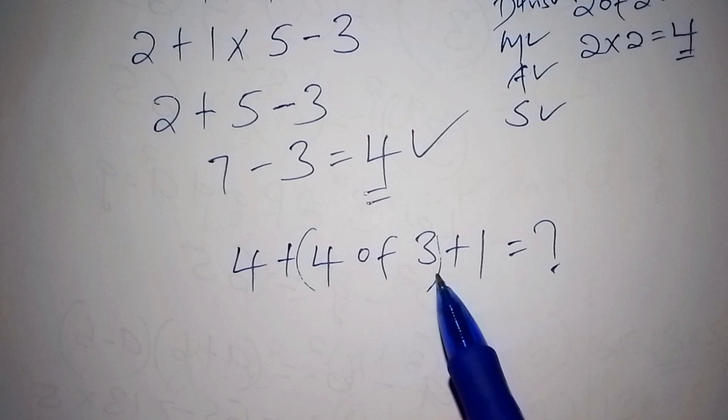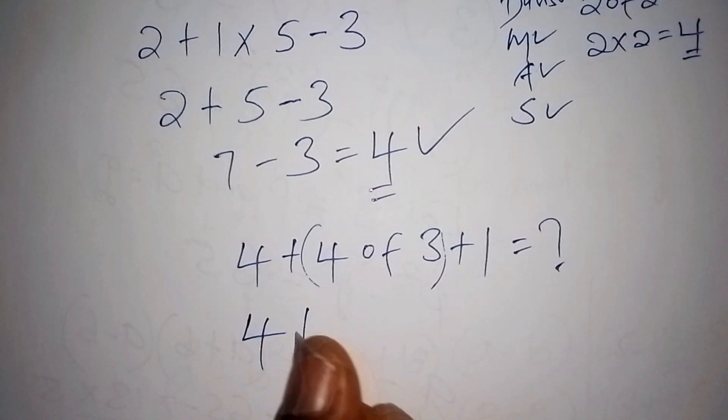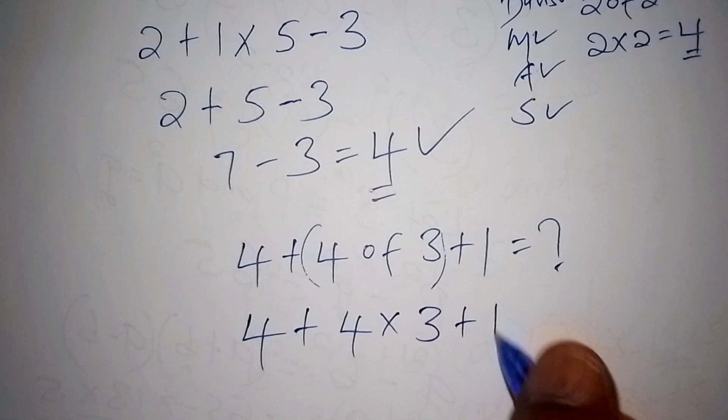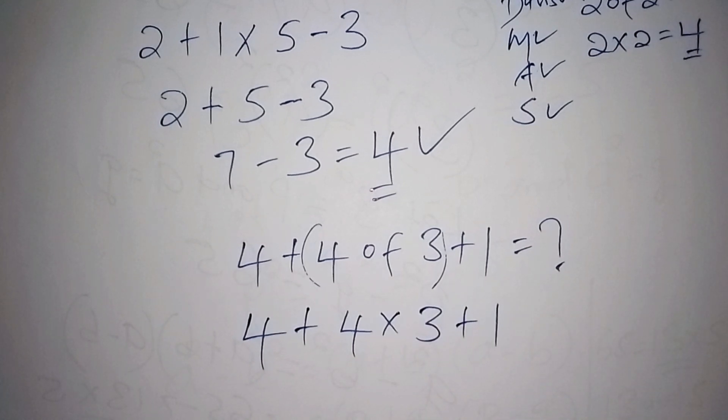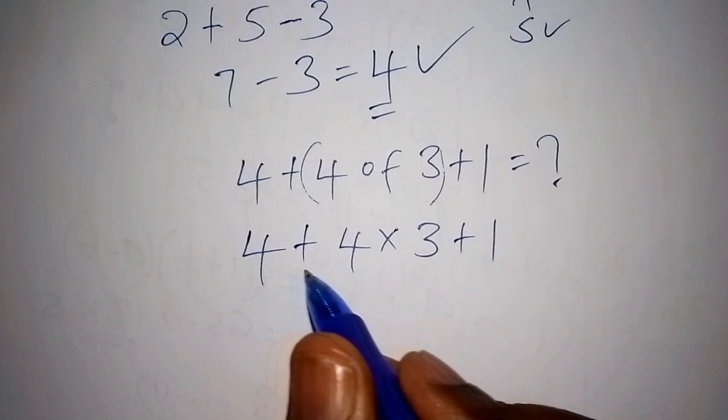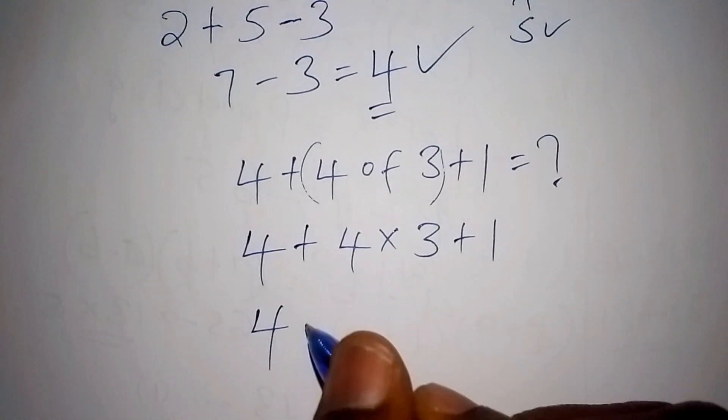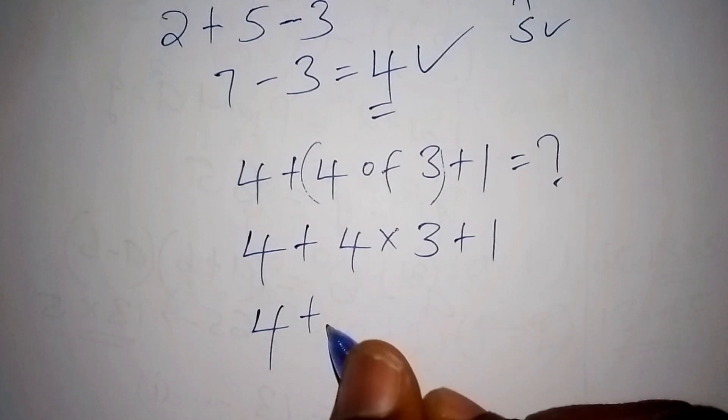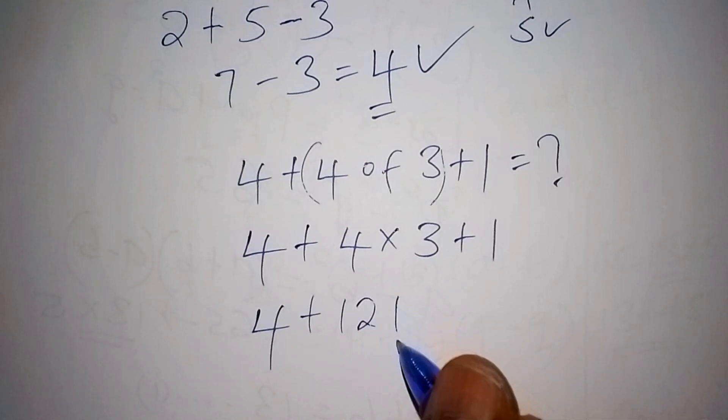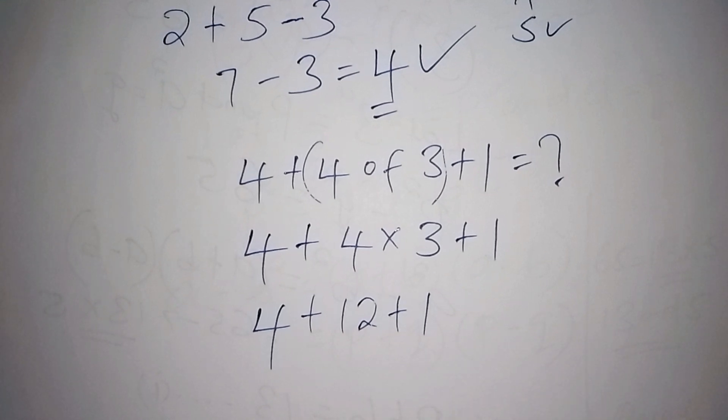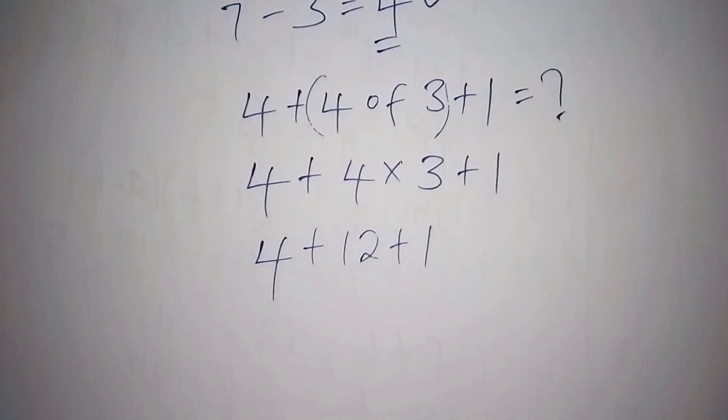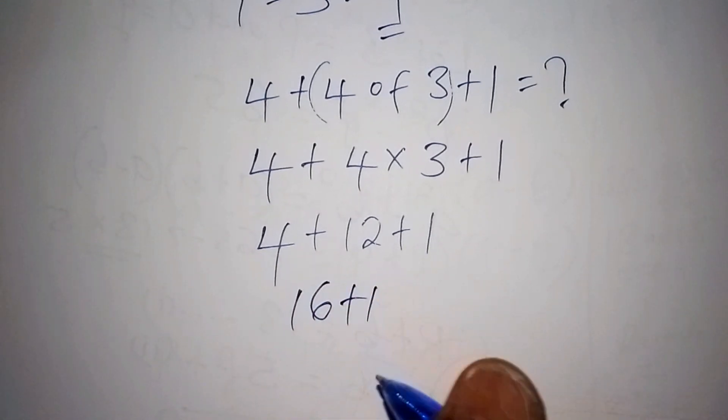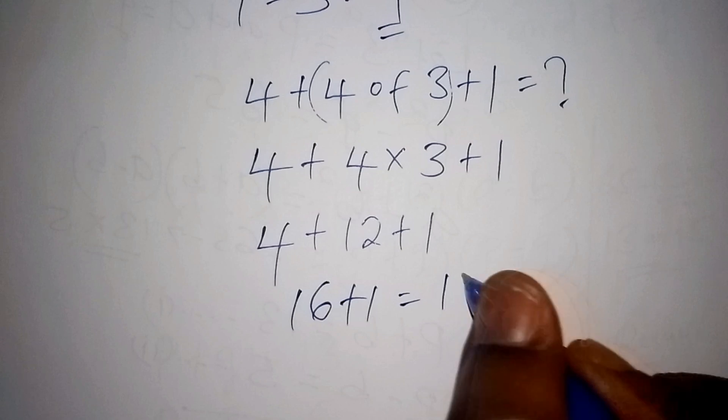So 4 of 3, it's like having 4 plus, 4 of 3 is 4 multiply by 3, then plus 1. So from here, we shall say that 4 remains 4, then plus, 4 times 3 is 12, so we have 12 there, plus 1. So all of them is addition. So 4 plus 12 is 16, and 16 plus 1 finally becomes 17.